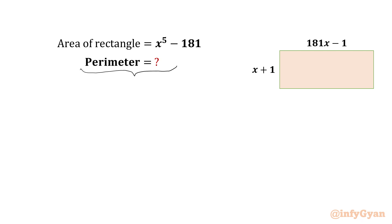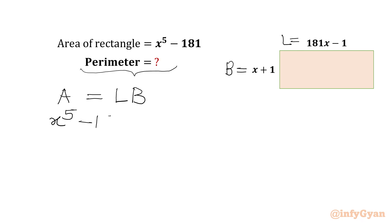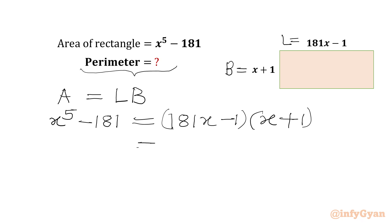Let's get started by considering 181x minus 1 as L (length) and x plus 1 as breadth B. So we can write the area of the rectangle as equal to L times B. Let's put in the values: A equals x to the power 5 minus 181, which equals (181x minus 1) times (x plus 1). Let's simplify.